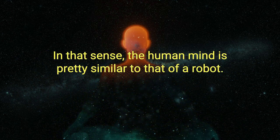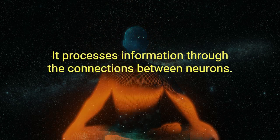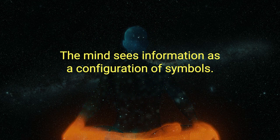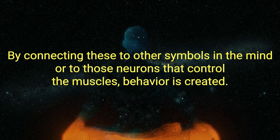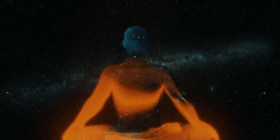In that sense, the human mind is pretty similar to that of a robot. It processes information through the connections between neurons. The mind sees information as a configuration of symbols. By connecting these to other symbols in the mind, or to those neurons that control the muscles, behavior is created.